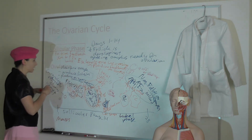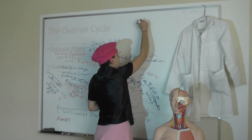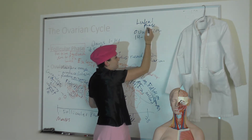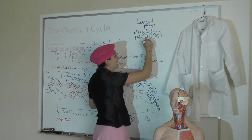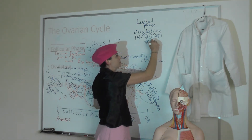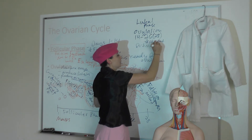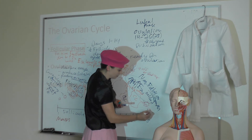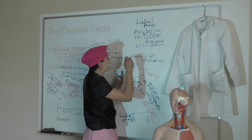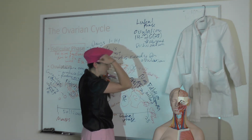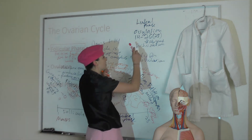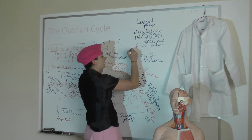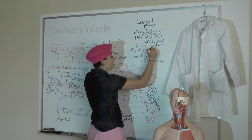The luteal phase runs from ovulation — day 14 — to about day 26 or 28. Absent fertilization, the corpus luteum is going to regress and become the corpus albicans, which is just scar tissue. As that happens, progesterone and estrogen levels drop off, releasing the hypothalamus from negative feedback. The corpus luteum dies, undergoes atresia, and becomes the corpus albicans — just scar tissue — and the cycle is ready to begin again.